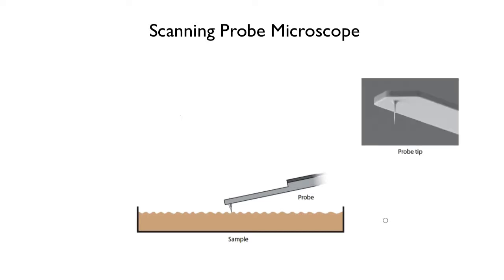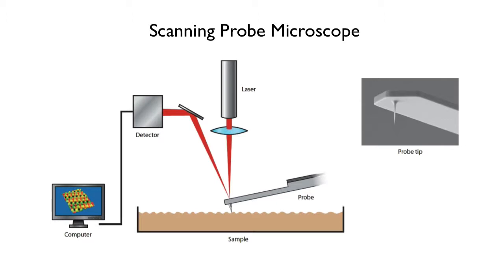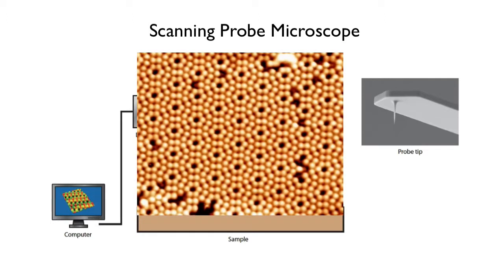An ultra-thin needle is dragged over the surface. Laser light can then be focused to measure the rise and fall of this needle as it passes over individual atoms. A computer can then be used to join all this data into a topographical image, showing the positions of individual atoms relative to each other.